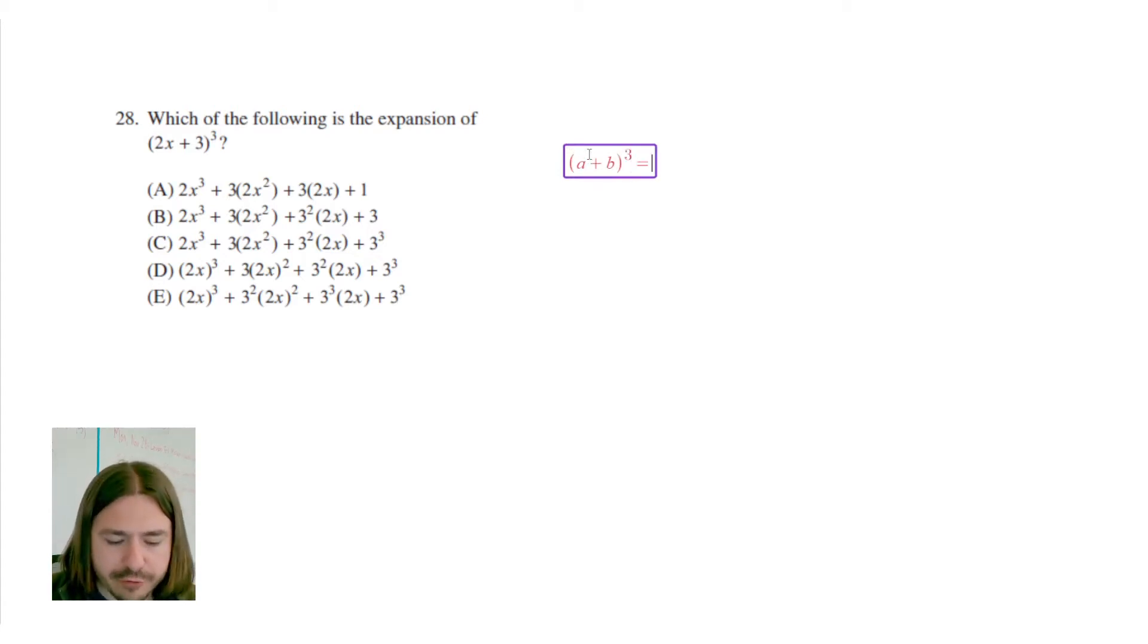Whatever the first term is, cubed, plus 3 times the first term squared times the second term, plus 3 times the first term times the second term squared, finally plus the second term cubed.